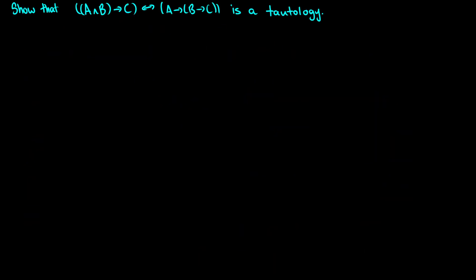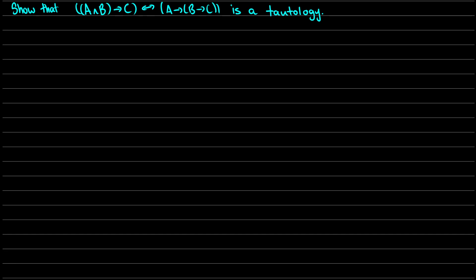One more practice question. Let's show that this monster is a tautology. Our first step is setting it up — we want to prove that this beast is a tautology, so that's our alpha. What we have to do is negate it, which means we're going to have a lot of brackets. We're going to have 'not-(if (a and b) then c)' is the same thing as '(a arrow (b arrow c))' — and this is our assumption.